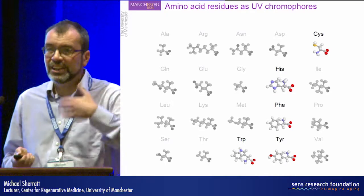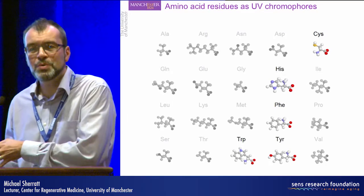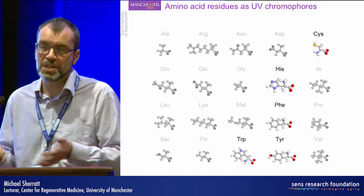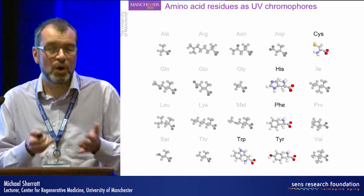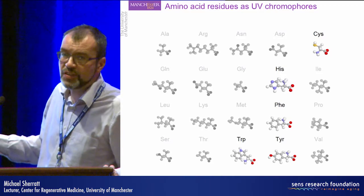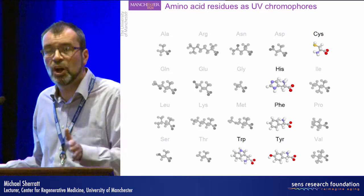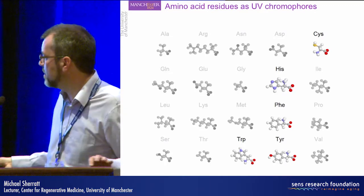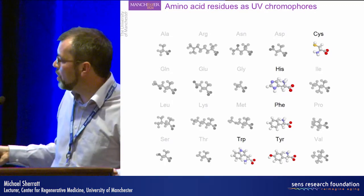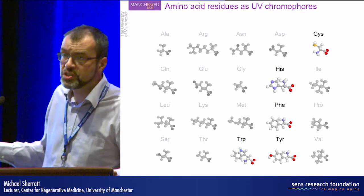We can also expand our analysis and look at all 20,000 proteins in the human proteome, asking which of those proteins might be particularly susceptible to oxidation. Here we have tryptophan and tyrosine content on one axis, and cysteine and methionine as oxidation-sensitive amino acids on the other axis. Most proteins have around 4% to 5% of either cysteine, methionine, or tryptophan and tyrosine.